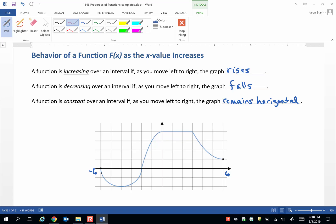It begins with a decreasing interval from negative 6 to negative 4. Then it starts to increase from negative 4 and continues to increase until it hits 0.